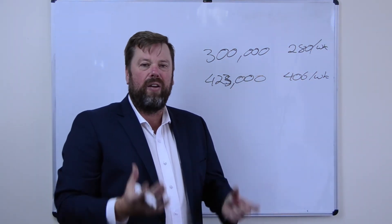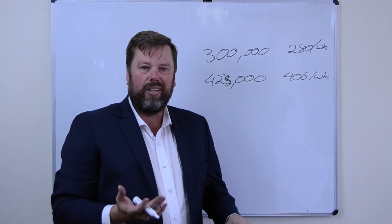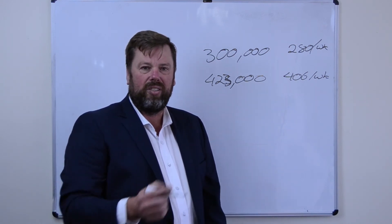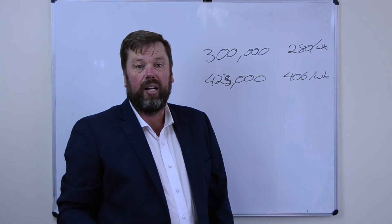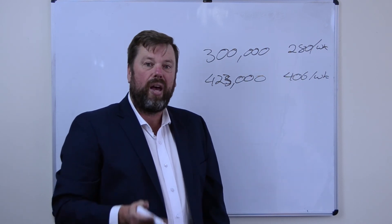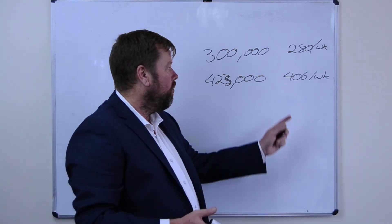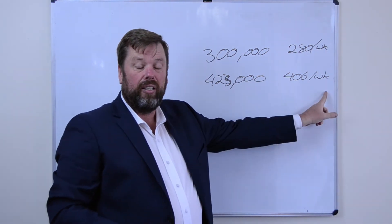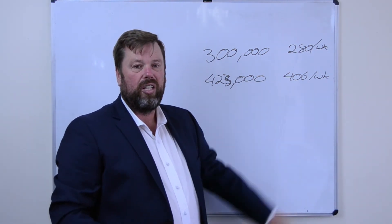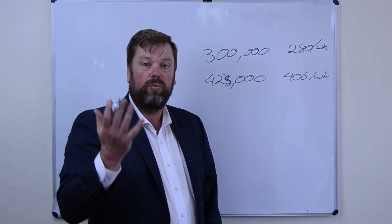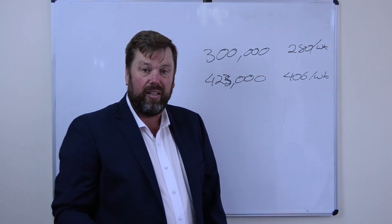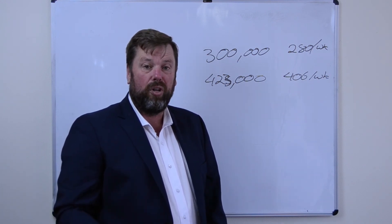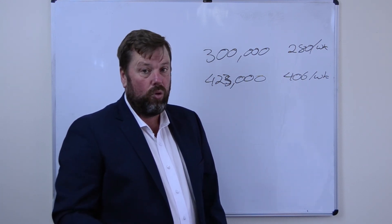Now interest rates might vary slightly in that time frame — we do go through the business cycle — but let's say we've gone through the whole 10-year cycle and interest rates are back to where they are now. Well then this property has become significantly cash flow positive, just through the natural attrition of the home loan going down and the rents going up, which helps you pay off your home loan faster and also build more wealth.